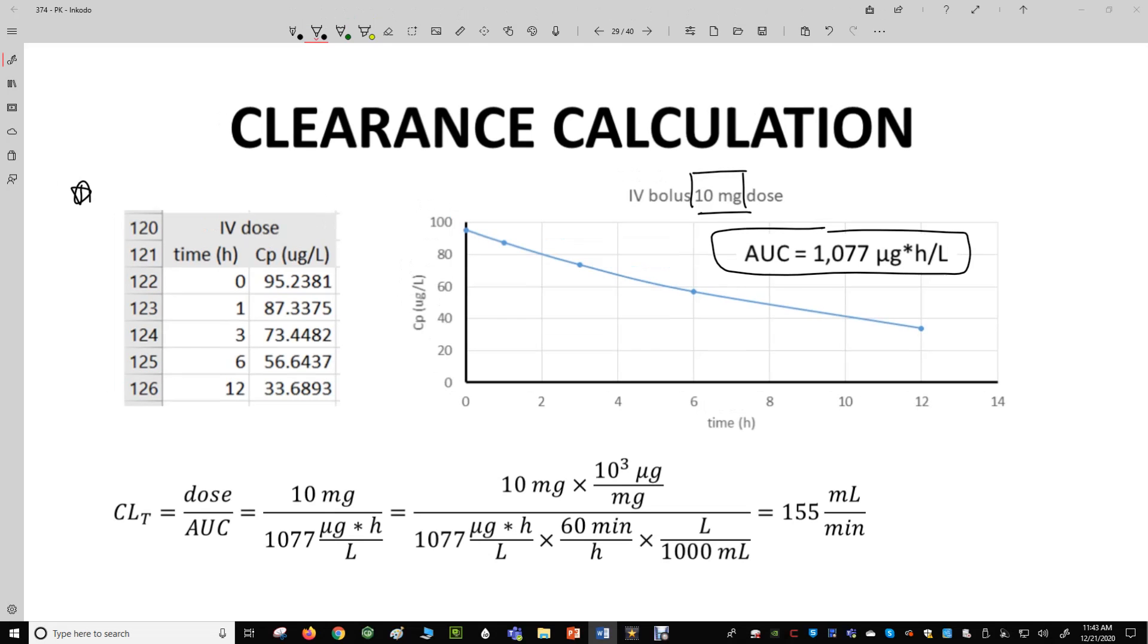We can see the formula in the bottom left. Clearance is equal to dose mass divided by AUC. Note that the mass units for dose are likely milligrams, and AUC is probably microgram or nanogram hours per volume. You need to convert various units to the same dimension for them to cancel properly. You'll also likely need to convert time from hours to minutes.